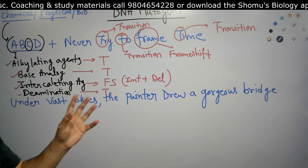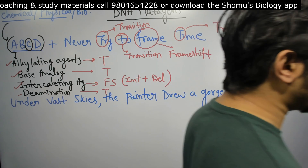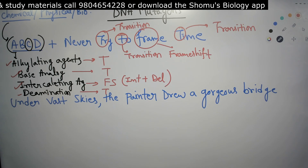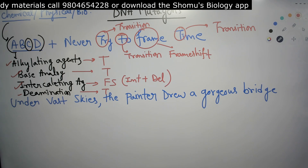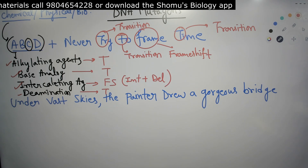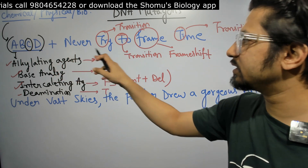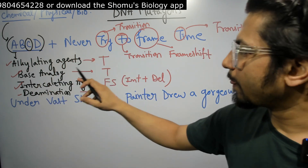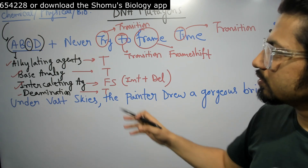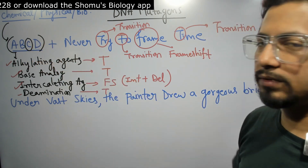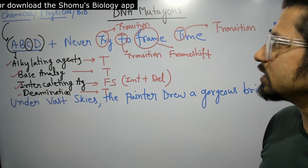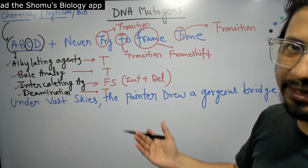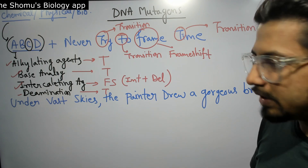Although these transitions are not the same type for all cases — the bases involved may differ slightly — they all cause transition. So by knowing ABCD and never try to frame time, you know four important chemical mutagens and the type of DNA damage they are responsible for.